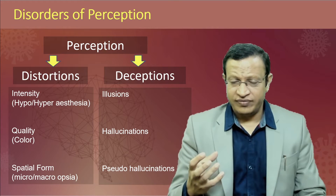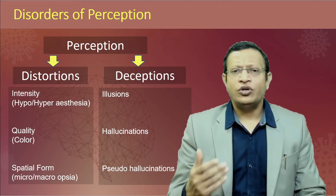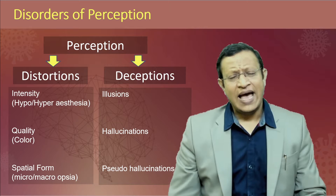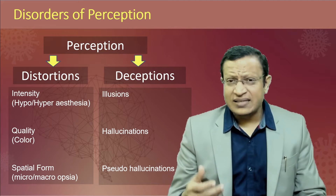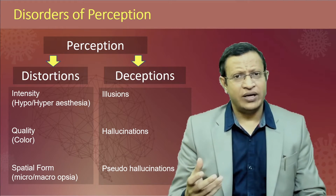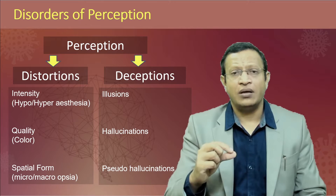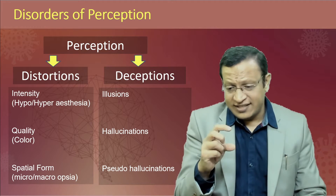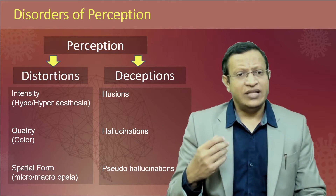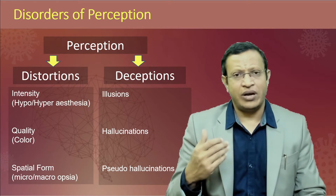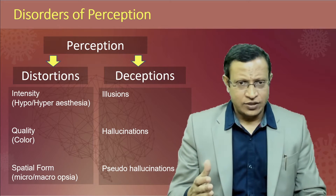Spatial forms of disorder: sometimes objects will be seen as small or big. They are called micropsia or macropsia. Though these distortions are seen as part of psychopathology, they do not have much diagnostic meaning. However, if you look into older studies, early signs of schizophrenia — the patient reported micropsia or macropsia before they developed frank schizophrenia. But at this point in time, micropsia, macropsia, quality change, hypoesthesia, or hyperesthesia do not have diagnostic validity.